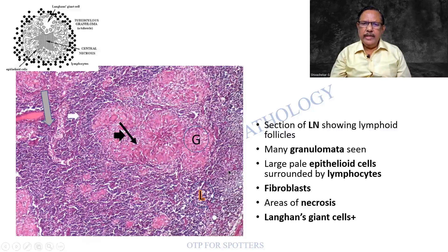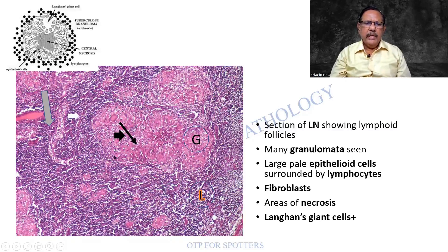This is a microscopic slide in which I am able to see lymphoid follicles. Look at this region — there are a lot of lymphocytes here. But what is important is there are multiple large areas that are well-circumscribed, joining together to form map-like areas again. There are a good number of Langhans type of giant cells.